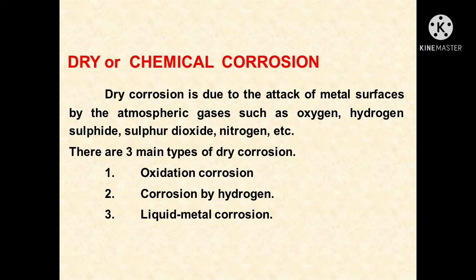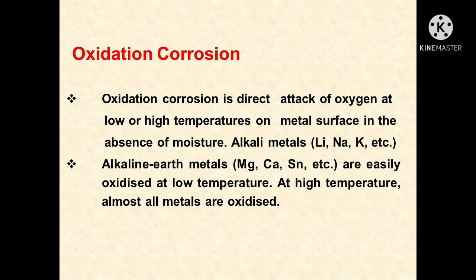There are three main types of dry corrosion: oxidation corrosion, corrosion by hydrogen, and liquid metal corrosion. Oxidation corrosion is the direct attack of oxygen at low or high temperature on a metal surface in the absence of moisture. Alkaline metals like lithium, sodium, and potassium, and alkaline earth metals like magnesium, calcium, and tin are easily oxidized at low temperature. At high temperature, almost all metals are oxidized except silver, gold, and platinum.